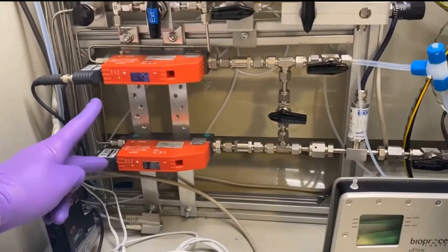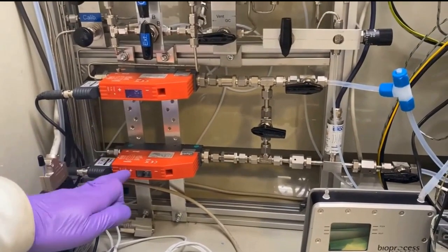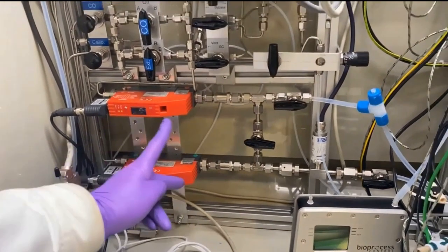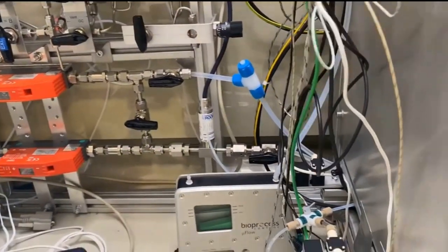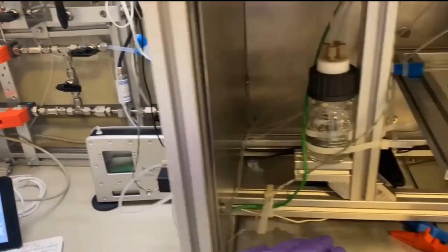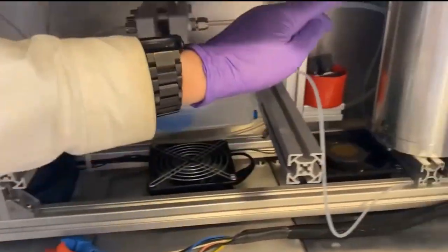Machine learning can enhance real-time process monitoring and control in hydrogen production. By analyzing data from sensors, machine learning algorithms can identify anomalies and deviations from optimal operating conditions.